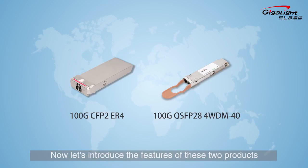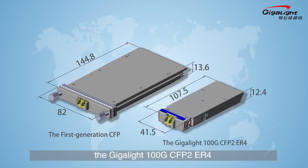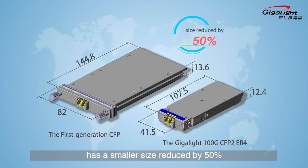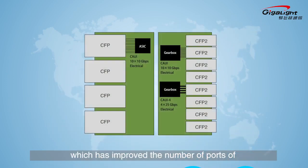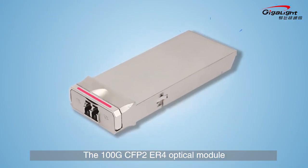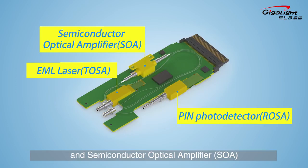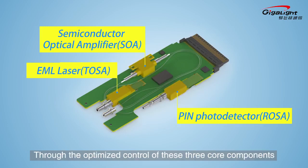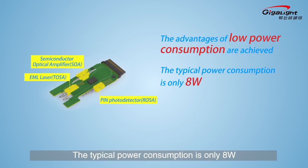Compared with the first-generation CFP optical module, the Gigalite 100G CFP2 ER4 has a smaller size reduced by 50% and lower power consumption reduced by 40%, which improves the port density of core devices and data exchange capability. The CFP2 ER4 adopts the EML laser, PIN photo detector, and semiconductor optical amplifier. Through optimized control of these three core components, typical power consumption is only 8 watts.